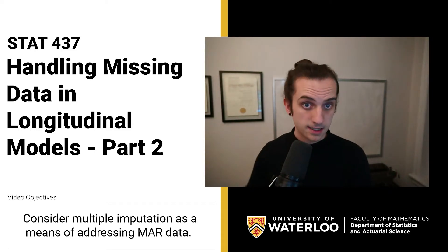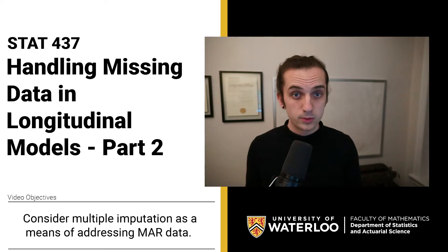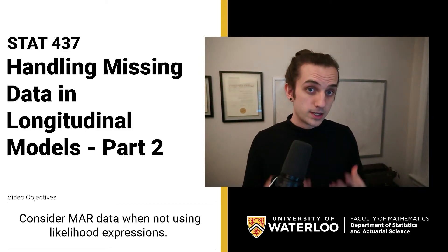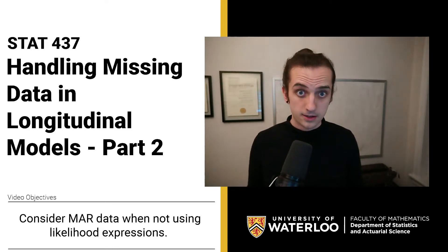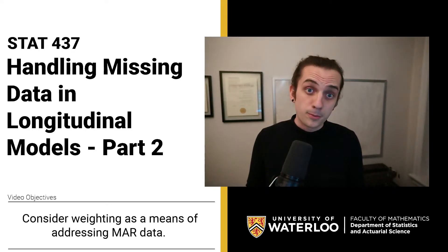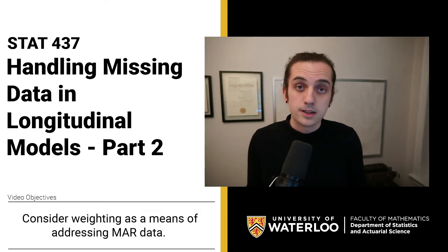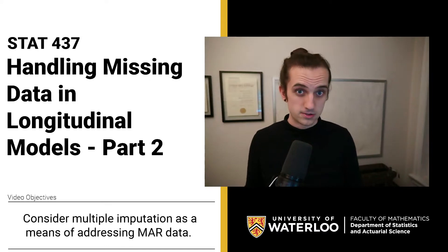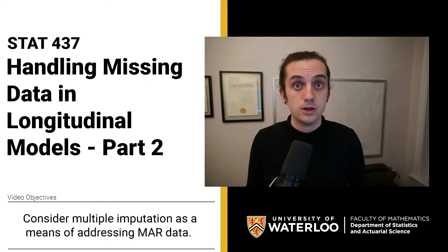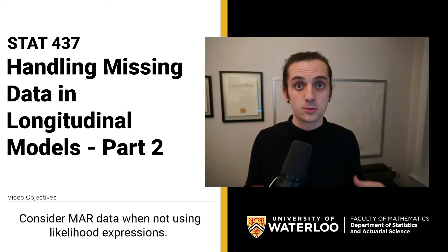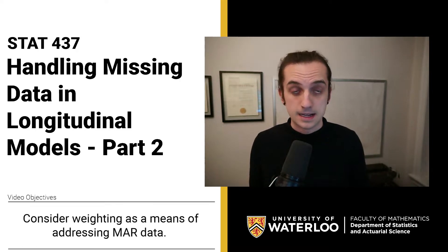In the last video we saw when we have missing completely at random data or not missing at random data, how we can look at what the impacts of that are. When it's missing completely at random we don't really have to fuss too much about it, and when it's not missing at random it can totally invalidate all of the methods that we would like to use. We then took a look at missing at random data and saw that when we're using a likelihood method it seems to be fine without adjustments, but if we're not using likelihood-based methods then we run into issues. So in the conceptual lecture we talked about how one of the ways to account for missing at random data are either using weighting-based methodologies or imputation.